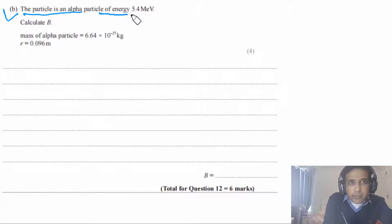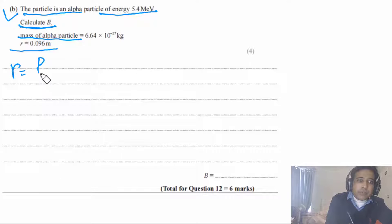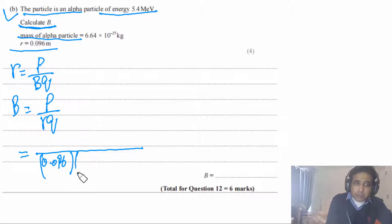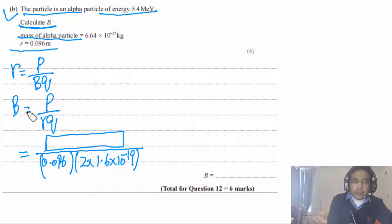Part b: the particle is an alpha particle with kinetic energy 5.4 MeV. We calculate magnetic flux density B. From r = p/(BQ), we get B = p/(rQ). Radius r = 0.096 m. Charge on alpha particle = 2 × 1.6 × 10⁻¹⁹ C. We need to find the momentum p from the kinetic energy.